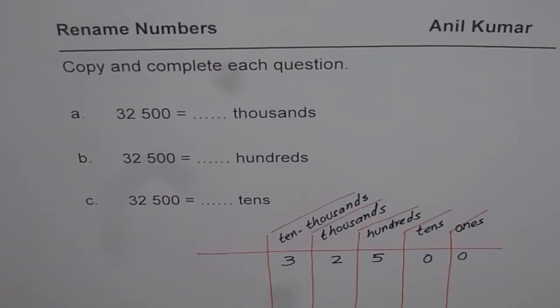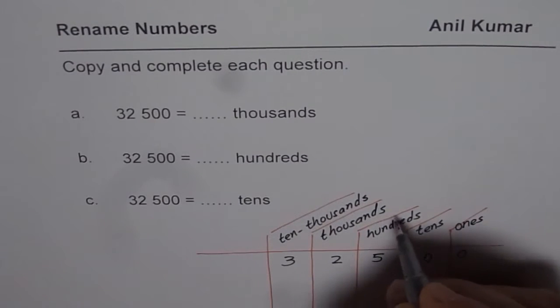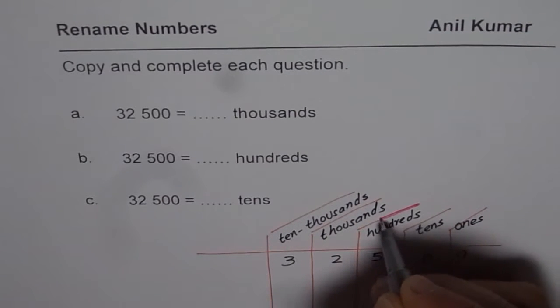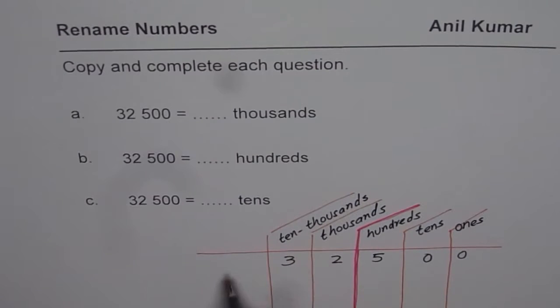Now the question is, we have periods of three numbers each. So it is divided in this fashion. These numbers are thousands. So we could read this as 32,000, five hundred, that is how we could read it.